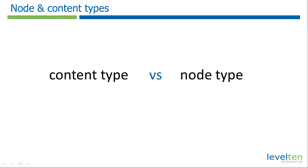Often you'll hear Drupal people use the term node type and content type interchangeably. For the most part, they convey the same concept, but be aware that technically they are different. Content types are what create node types. We'll get more into the details of how content types work in a later video, Introduction to Content Types. For now, if you hear either term, know that they refer to the way nodes are configured for specific uses.